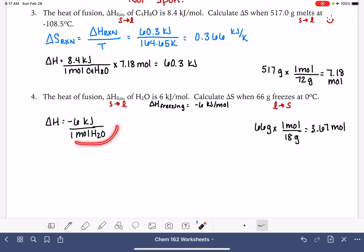So we've got our delta H with the correct sign, and we know how many moles we have, 3.67 moles. So we can figure out what the exact delta H value is for this substance, negative 22 kilojoules. Now we can go ahead and plug that into our delta S.